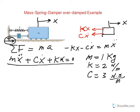So my differential equation becomes x double dot plus 3x dot plus 2x equals zero.